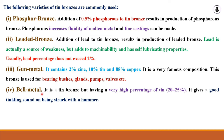Bell metal is a tin bronze but with a high percentage of tin — 20 to 25% — so it gives a good ringing sound when struck. In many locations you will find that bell material is made with this kind of composition.